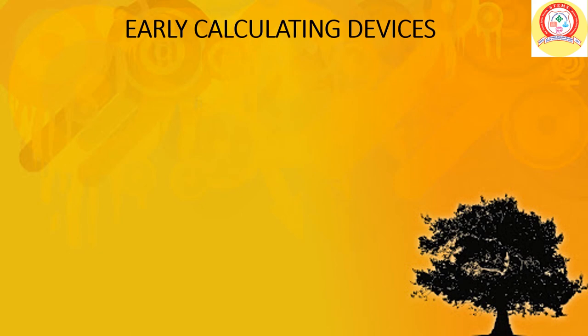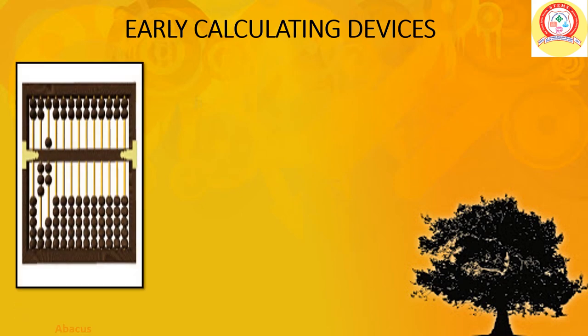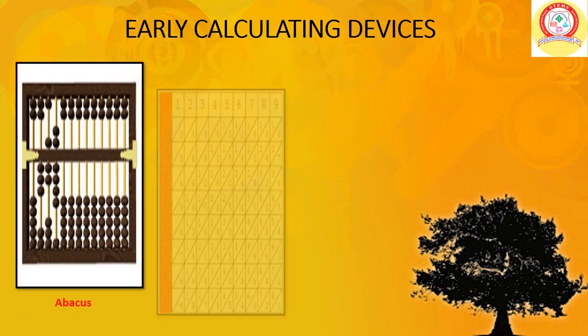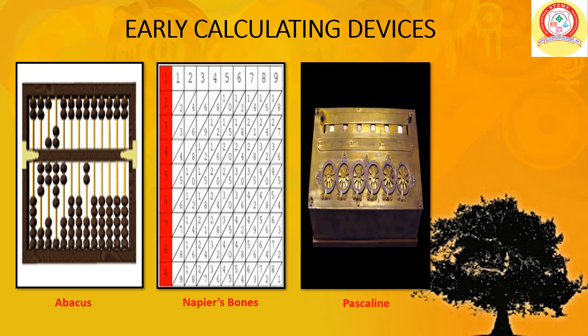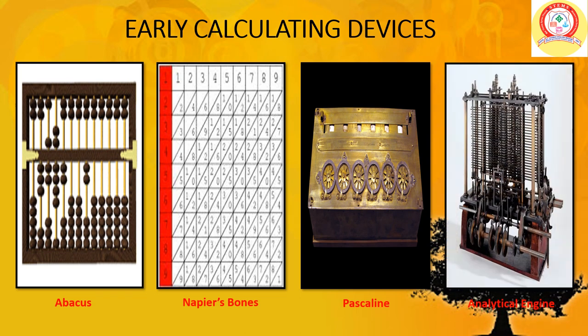Let us understand about some of the early calculating devices. Early calculating devices are: Abacus, Napier's Bones, Pascaline, Difference Engine, and Analytical Engine. These are some of the early calculating devices. Let us understand about these devices first.